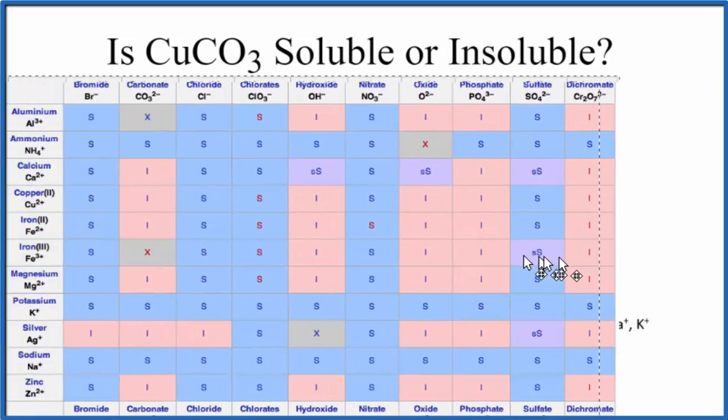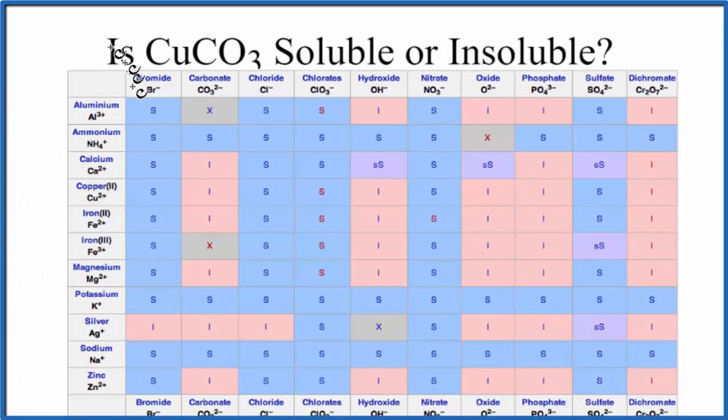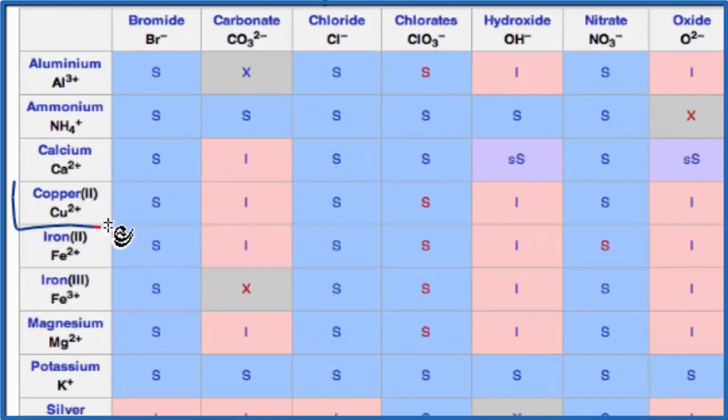We could also look at the solubility chart. So here's a solubility chart. The positive ions are on the left, the negative on top. Let's find copper. Here's copper(II), Cu 2+, and then here's the carbonate, CO3 2-.